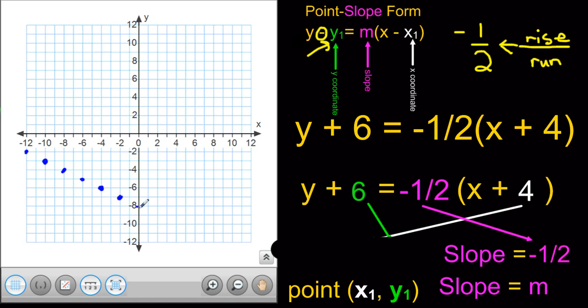So, down 1 to the right 2. Hey, there's my y-intercept. Down 1 to the right 2. Down 1 to the right 2. And then, once you're finished with that, you simply connect the points with a straight line.